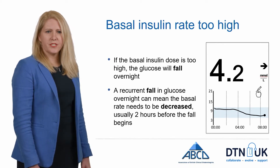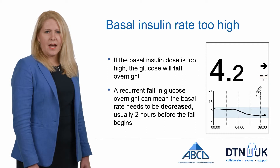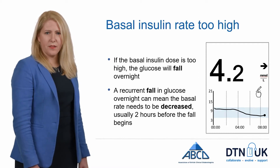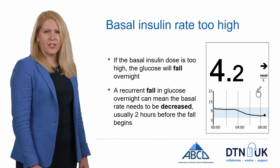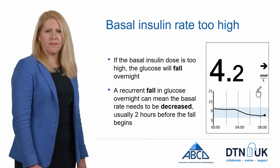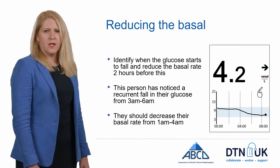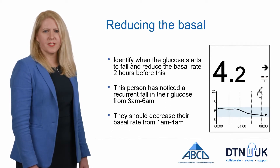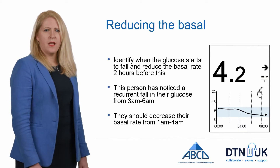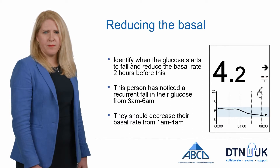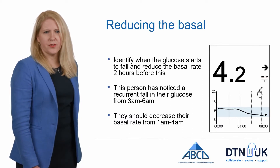In this example, the glucose is falling overnight. If you notice a recurrent fall in the glucose overnight, this is a sign that the basal insulin needs to be reduced. Again, we want to start the change in basal rates two hours before the start of the fall. So here, this person's glucose has dropped from 3am through to 6am. They therefore want to go back two hours and reduce the basal rate between 1am and 4am, then see whether this has a desired effect on their glucose.